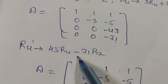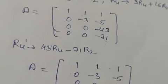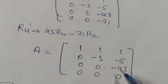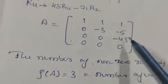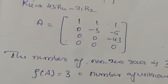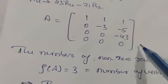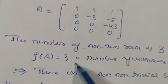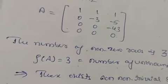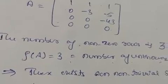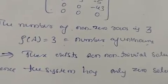After all row operations, the fourth row becomes all zeros, leaving 3 non-zero rows. Therefore, the rank of this matrix is 3, which equals the number of unknowns. So the system has only trivial solutions — meaning only zero solutions.